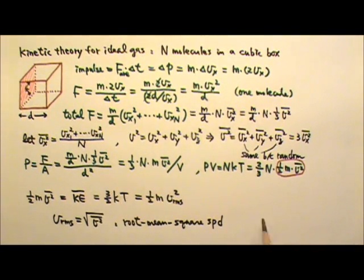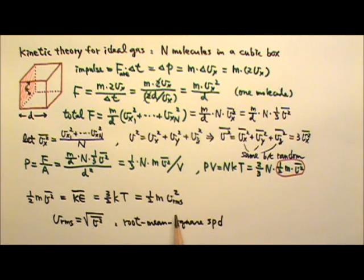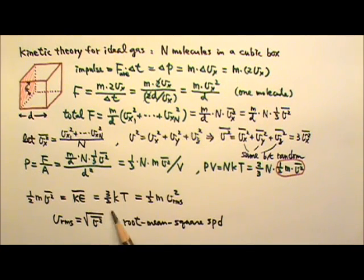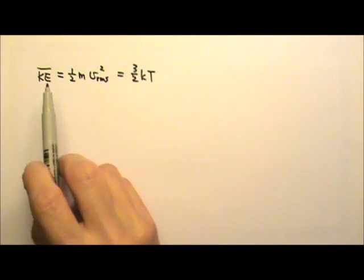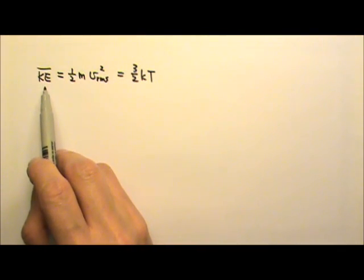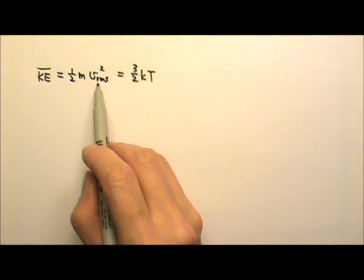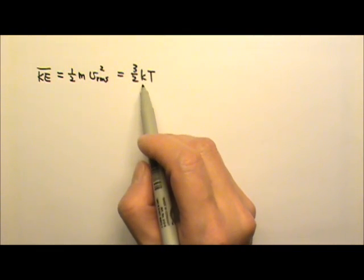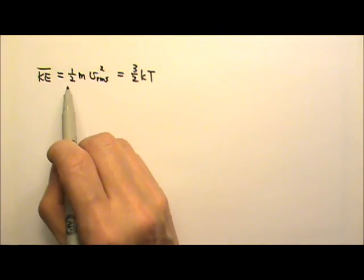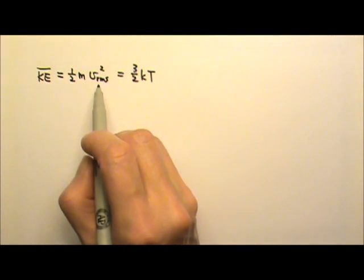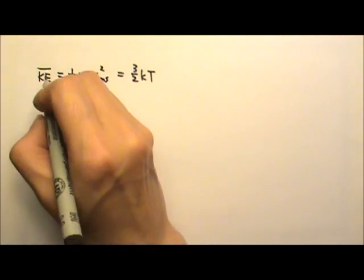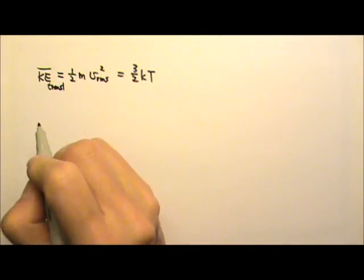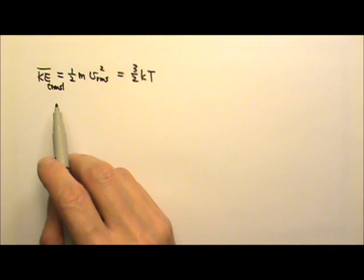So we just derived this equation. You won't be tested on the derivation on the AP exam, but you do need to know the result and how to use it. The average kinetic energy of one molecule is one half m times the root mean square speed squared, which equals three halves kT, where k is Boltzmann's constant. One important thing: one half mv squared is a kind of kinetic energy we call translational kinetic energy — so this is the average translational kinetic energy.